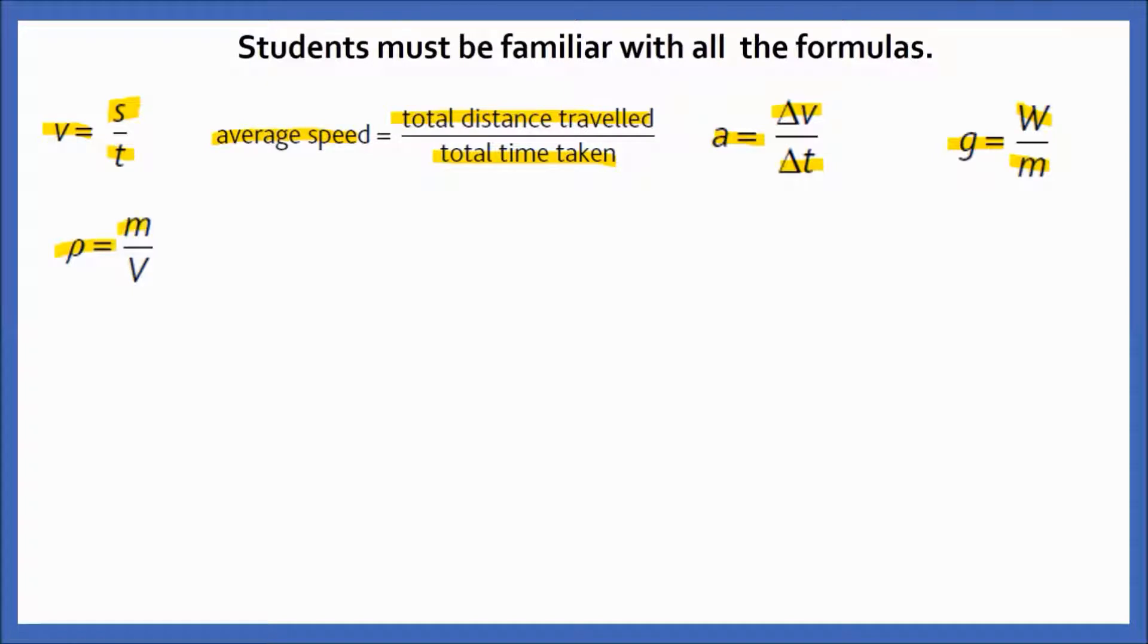Students must be familiar with all the formulas which are given in the syllabus. Let us see one by one. Speed: v = s/t, here s represents distance. Average speed = total distance travelled / total time taken. Acceleration = change in velocity / time taken. Gravitational field strength = weight / mass. Density = mass / volume.